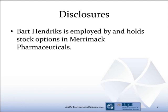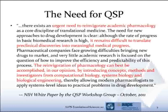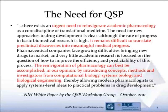So in 2011, the NIH had a workshop on this topic and put together a white paper that had some nice quotes in it. I'll just read the highlighted section, which is meant to illustrate the need for quantitative systems pharmacology: 'There's an urgent need to reinvigorate academic pharmacology. It remains difficult to translate preclinical discoveries into meaningful medical progress. The reinvigoration of pharmacology can best be accomplished, in our opinion, by introducing concepts, methods, and investigators from computational biology, systems biology, and biological engineering.'